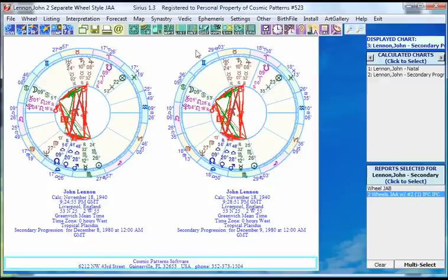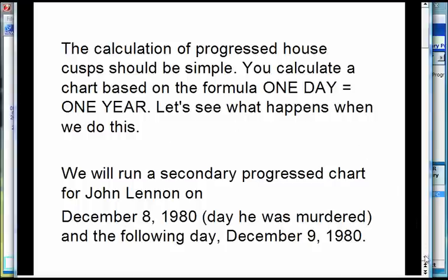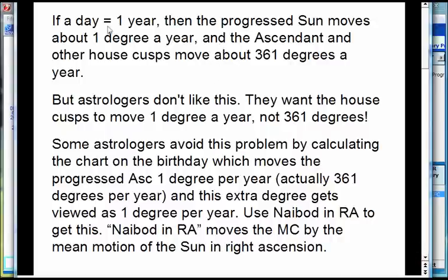The houses move about one degree in a day. That makes sense, because in one day the Sun moves about a degree — and that becomes a year of life. How far do the houses move in a day? They move all the way around, because they're moving one degree every four minutes, which means they move all the way around plus a degree. So if you do a chart for right now and then do a chart for one day later at the same time, the houses will have moved 361 degrees — almost one degree per day by progression.